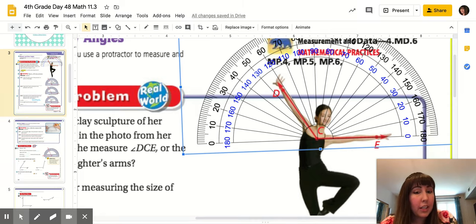So now to get our measurement, we follow this line up here. And we're going to follow it all the way up to the top number. And this CD ray is extending out to about 60 degrees. So that's how we use our protractor to measure angle E, C, D.